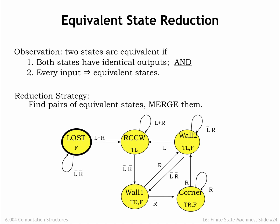Our strategy for deriving an equivalent machine with fewer states will be to start with our original FSM, find pairs of equivalent states, and merge those states. We'll keep repeating the process until we can't find any more equivalent states.